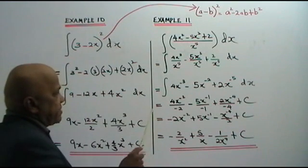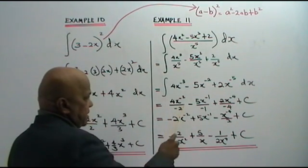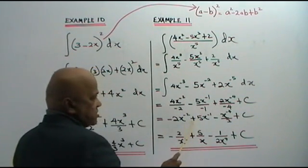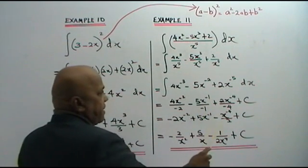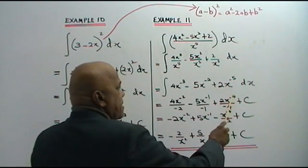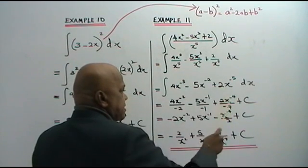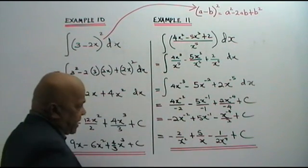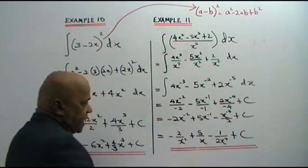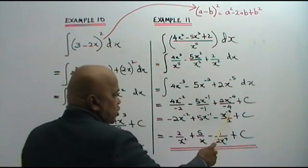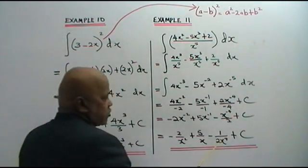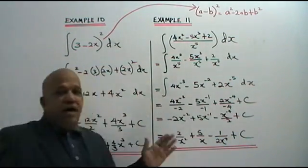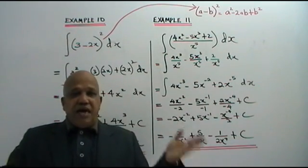So from here you get: positive — negative, negative gives positive — 2 over negative 2, cancel this, giving 2; x to the power of negative 2. Then positive 5 over negative 1; x to the power of negative 1. Minus x to the power of negative 4 over 2, cancel to get 2. Now converting: x to the power of negative 2 brings down to x squared; x to the power of negative 1 brings to x; x to the power of negative 4 brings to x to the power of 4. So you get negative 2 over x squared plus 5 over x minus 1 over 2x to the power of 4 plus C. As simple as that.